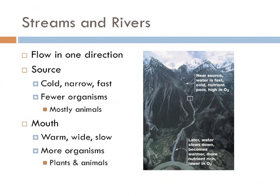Streams and rivers are freshwater ecosystems with flow in a single direction, compared to estuaries which flow in two directions based on the tides. The source of the river is usually very cold, narrow, and fast — not a lot of organisms, and those that are there are mostly animals, because it's just too cold and too fast. But at the mouth of the river, the water is typically warm and wide and moves really slowly. These conditions allow plants to take root, and you'll also see a lot more animals.